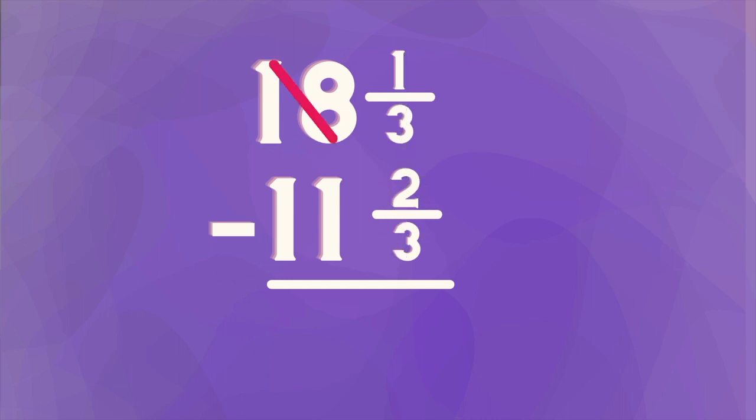We're going to go next door and borrow just like we would with whole numbers. We're going to borrow from the 18. That'll be 17. But this time our problem is we don't have enough thirds. So we're going to borrow one from next door, but we're going to change it into thirds. So one is the same thing as three-thirds. Instead of calling it one, we're going to call it three-thirds because that's our problem. That's what we need. We need more thirds.